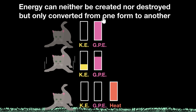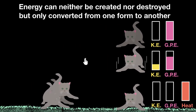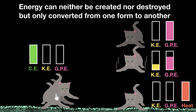Where did the gravitational potential energy come from? The cat had jumped, and that's how it gained it. But before jumping, the cat neither had kinetic energy nor potential energy — it was at rest on the ground. In order to jump, muscles have to move, which means work needs to be done, and there needs to be some energy for that. This energy present inside living beings is called chemical energy. So the cat used its chemical energy to jump and gained gravitational potential energy — chemical energy got converted into gravitational potential energy.